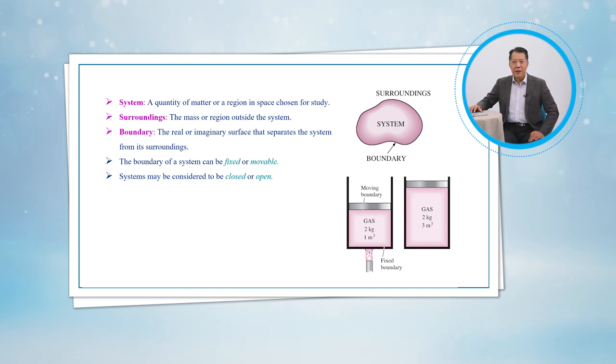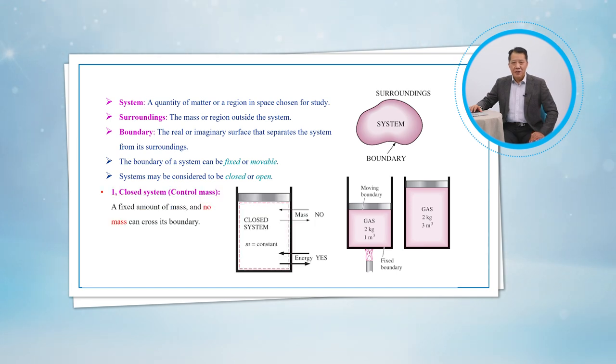Systems may be considered to be closed or open depending on whether a fixed mass or a fixed volume in space is chosen for study. A closed system contains a fixed amount of mass and no mass can cross its boundary. That is, no mass can enter or leave a closed system, but energy in the form of heat or work can cross the boundary. And the volume of a closed system does not have to be fixed.